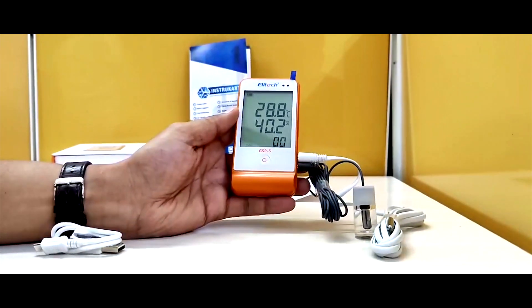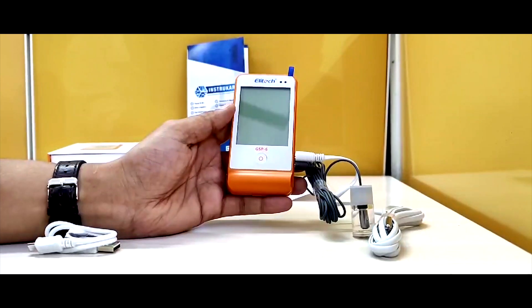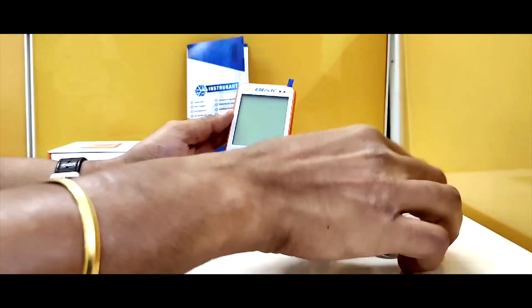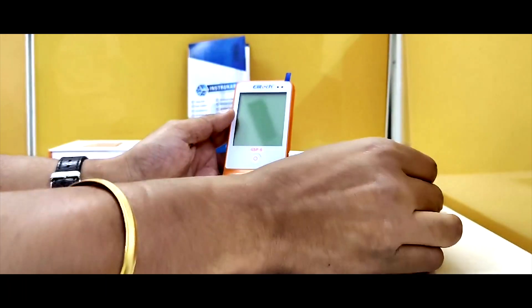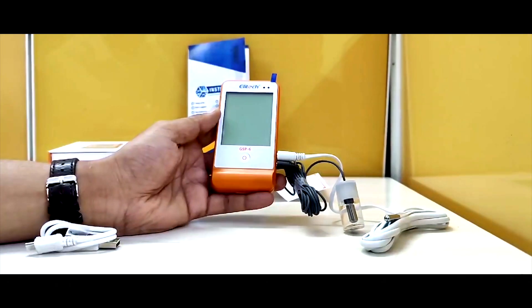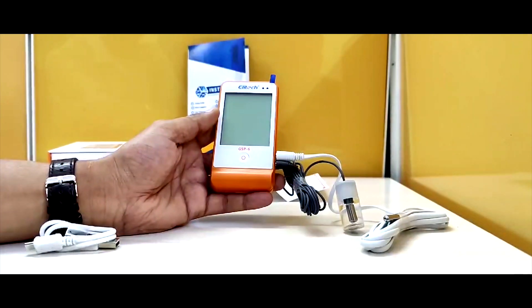For the logging, it has 16,000 data logging capacity. For the humidity, as you can see, this is an external probe, and that's the reason we can measure up to minus 42 to plus 85 degrees Celsius.